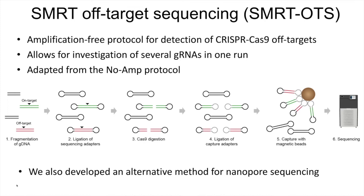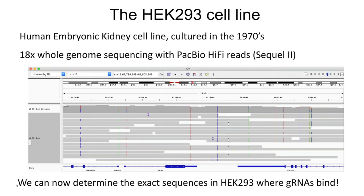We did experiments in the HEK293 cell line, an embryonic kidney cell line cultured since the 1970s. Since we want to know exactly where the guide RNAs are binding, we performed whole genome resequencing of this cell line using the latest PacBio HiFi reads on the SQL2. We sequenced this to 18x coverage. This image shows reads mapping to the genome in a 16 kb window, with very few errors in these reads. We can clearly see all the SNPs that are both heterozygous and homozygous and phase these in this large window. With this information, we can now determine the exact sequences where the guide RNAs will bind in this genome.